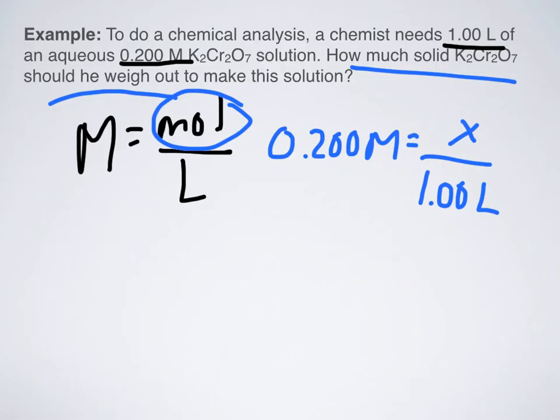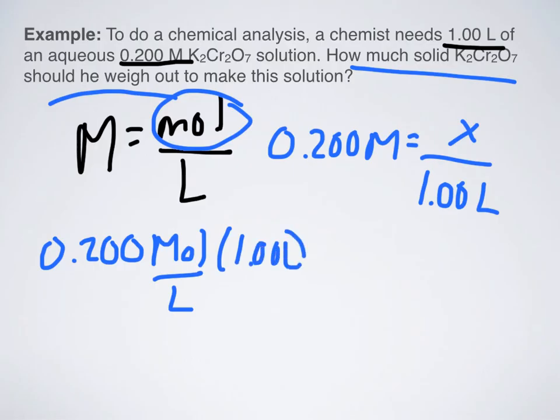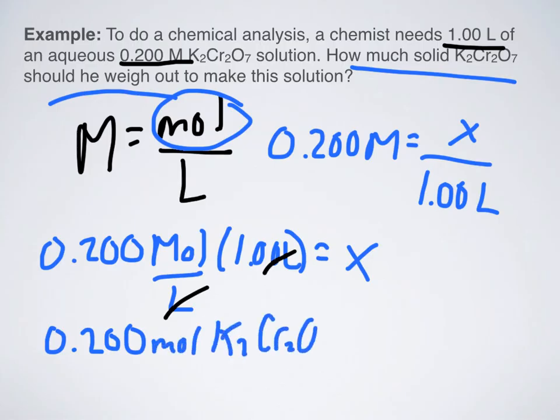So when we do this, we cross-multiply, and so think through this, I have 0.200 capital M. Now what is capital M? It's moles over liters. So when I multiply this by one liter to get x, what do I actually do? Well, my liters cancel out, and I'm left with a unit in moles like I wanted. So I have 0.200 moles of K2Cr2O7.